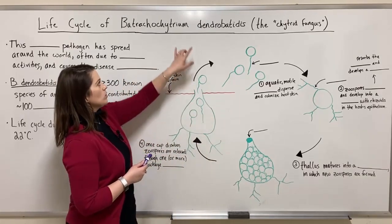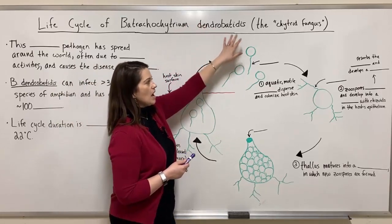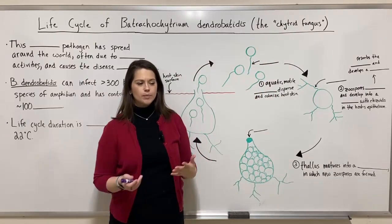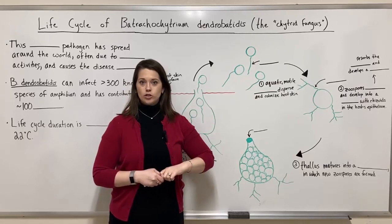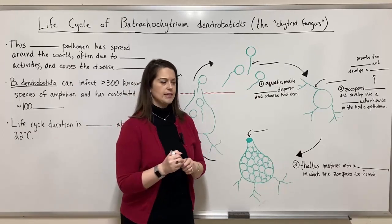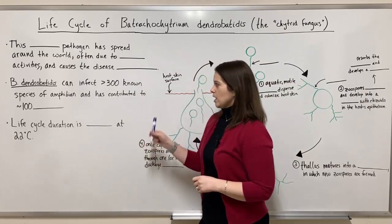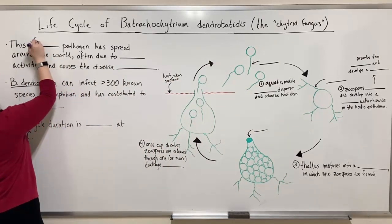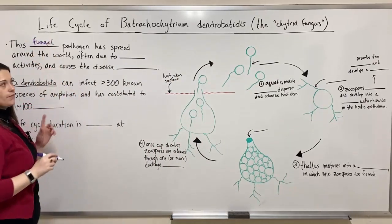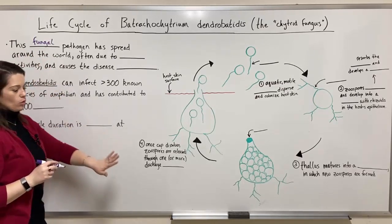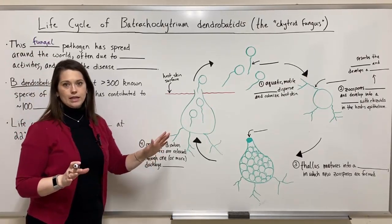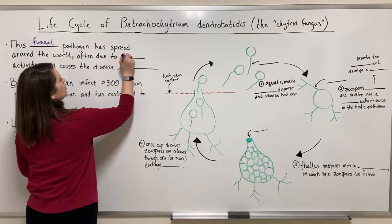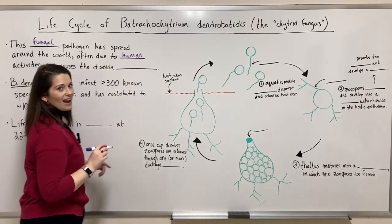Let's start talking about this life cycle. This is for Batrachochytrium dendrobatidis. Often this is referred to as the chytrid fungus. Of course it's not the only chytrid fungus, but it is very well known because of what it's been doing to global populations of amphibians. It has spread around the world — literally been found on every continent but Antarctica, where it's too cold for it to survive. So it's a global pathogen.